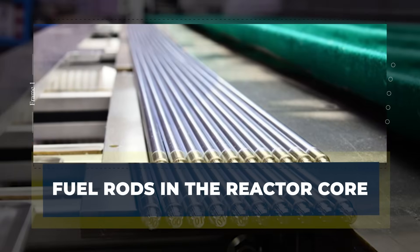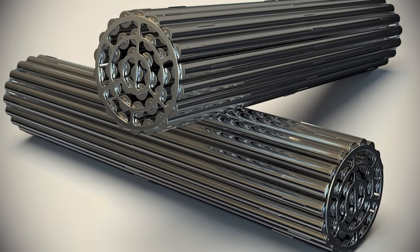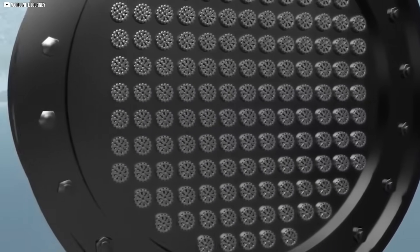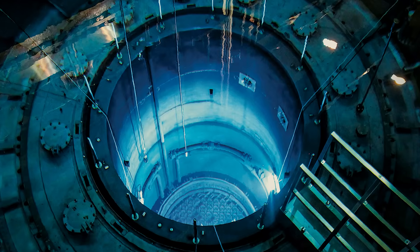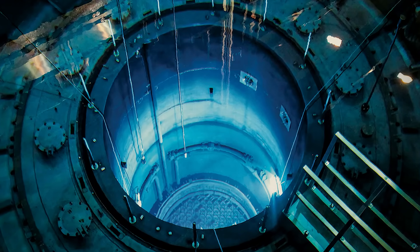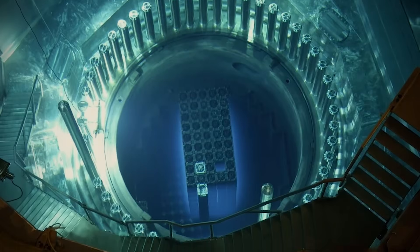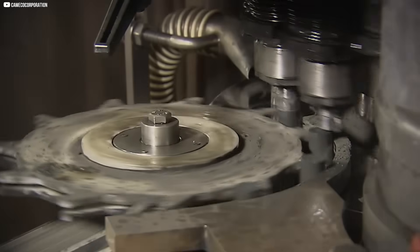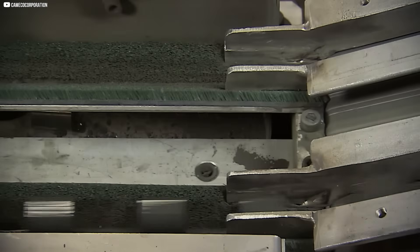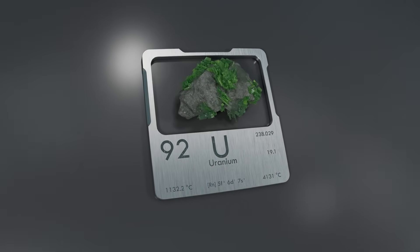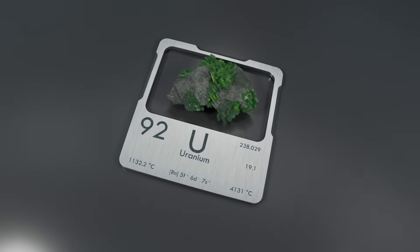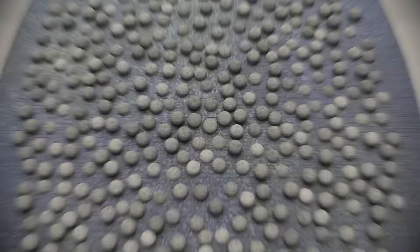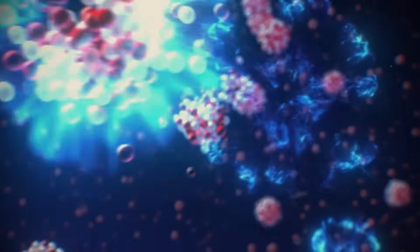Fuel rods in the reactor core. Once the uranium fuel rods are assembled into fuel assemblies, they are transported to the reactor core, where nuclear fission takes place. A typical reactor core consists of hundreds of these fuel assemblies, carefully arranged to maximize efficiency. Each assembly contains several long rods, each filled with uranium pellets, ready to undergo fission. In the reactor, the uranium-235 atoms in the fuel rods are bombarded by neutrons, causing them to split and release a tremendous amount of heat and more neutrons, which continue the chain reaction.